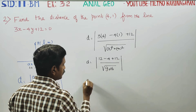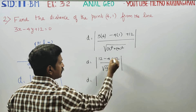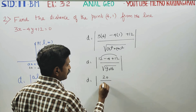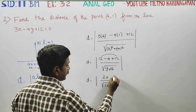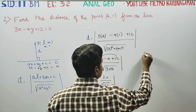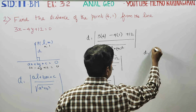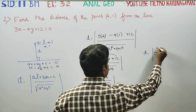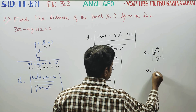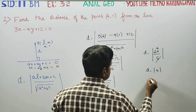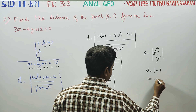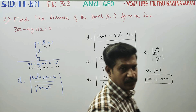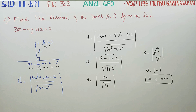D equals 20 divided by √25, which is 5. So D equals 20/5 = 4. The positive answer is 4 units. The distance of the point from the straight line is D = 4 units. Thank you.